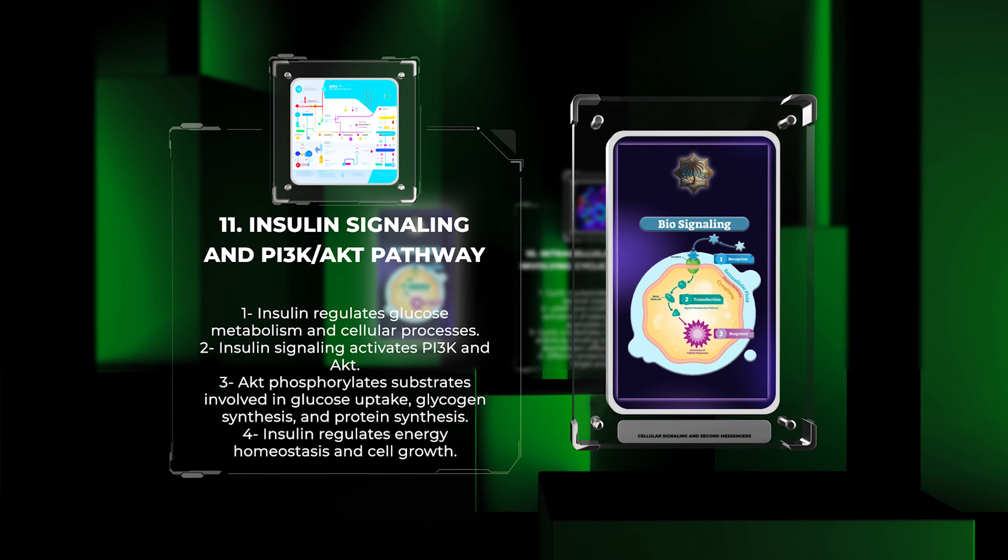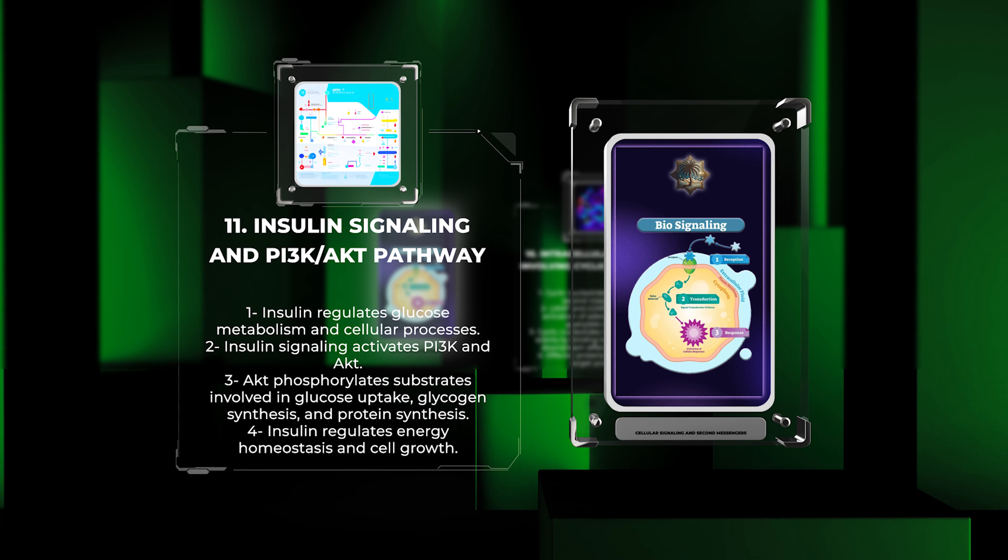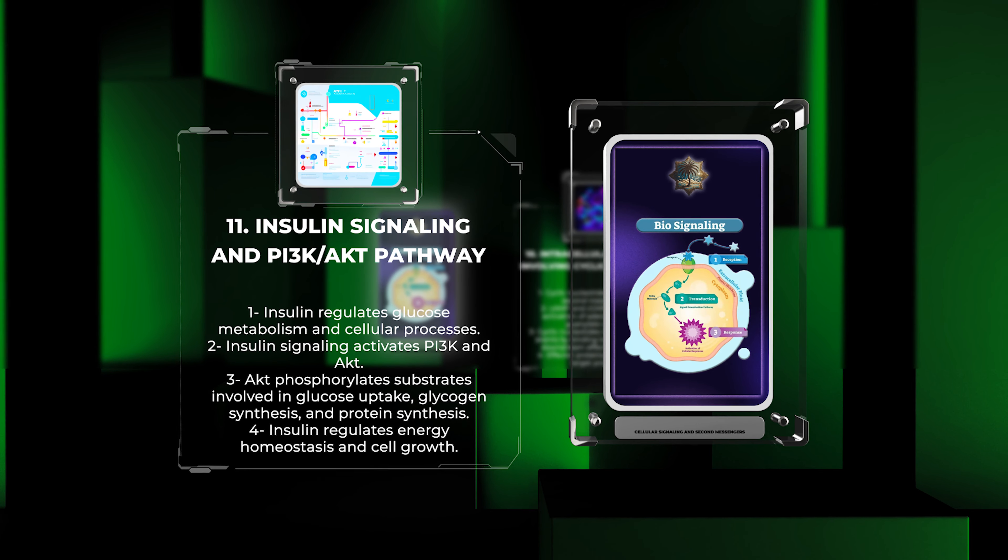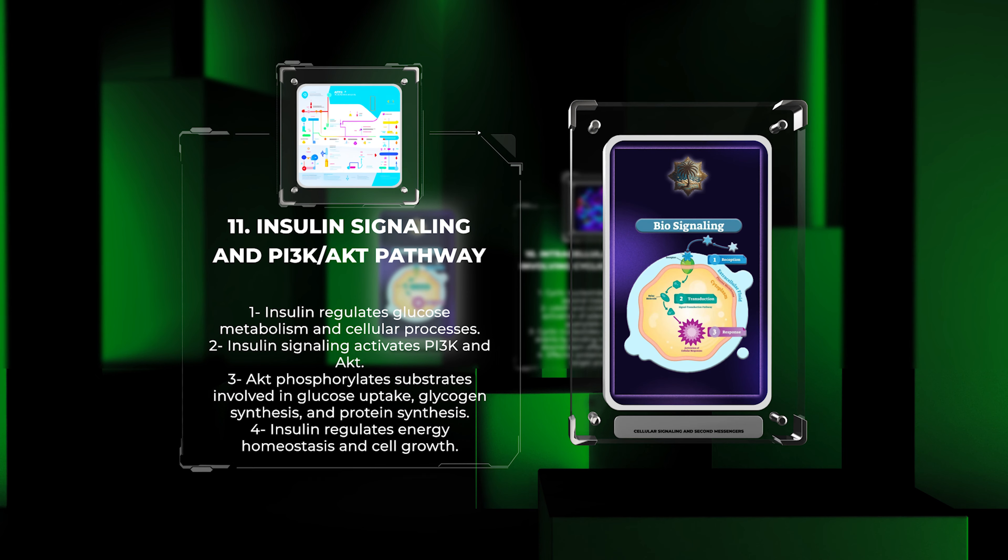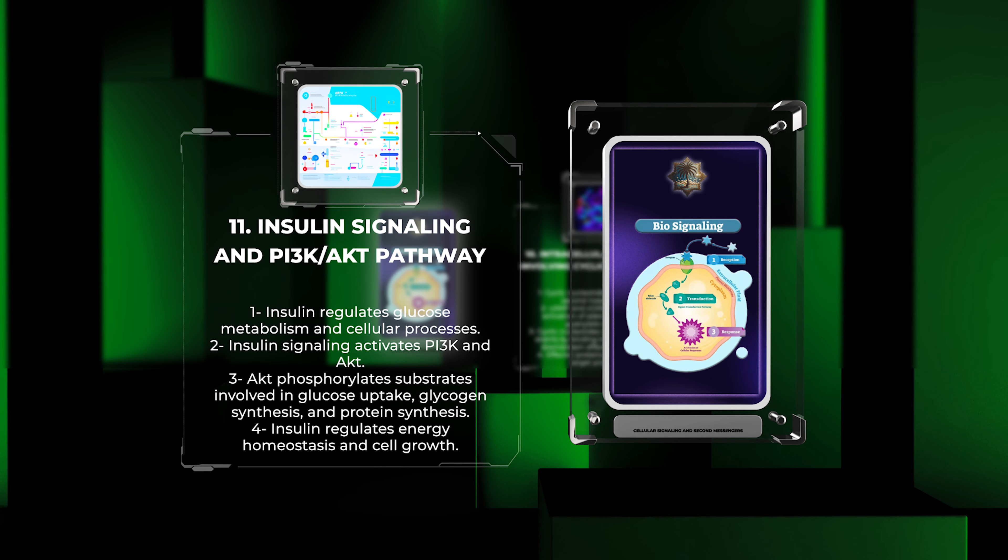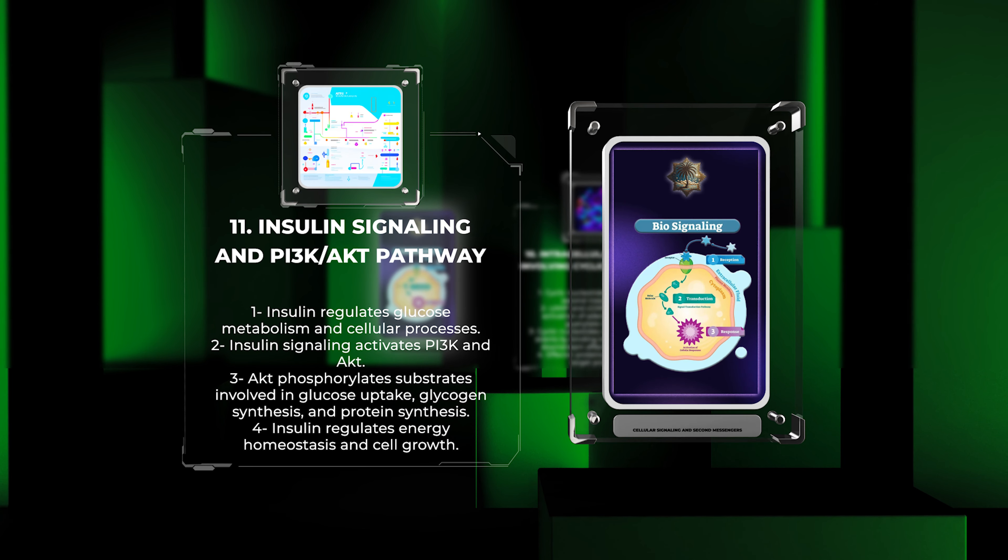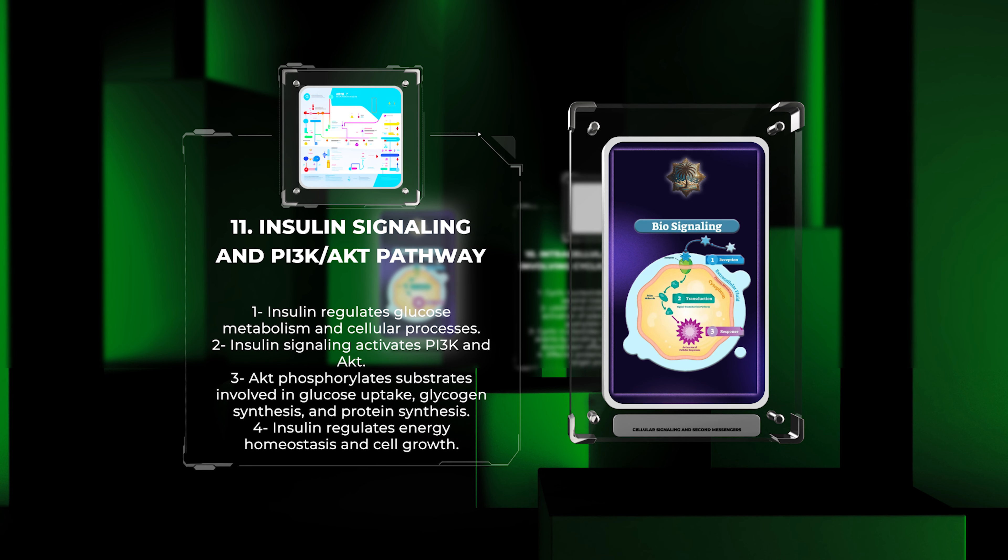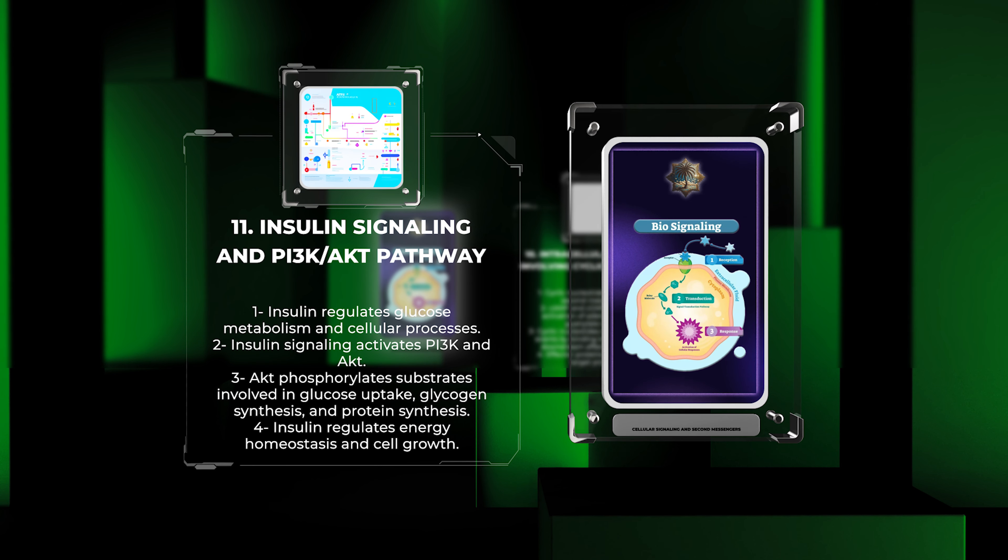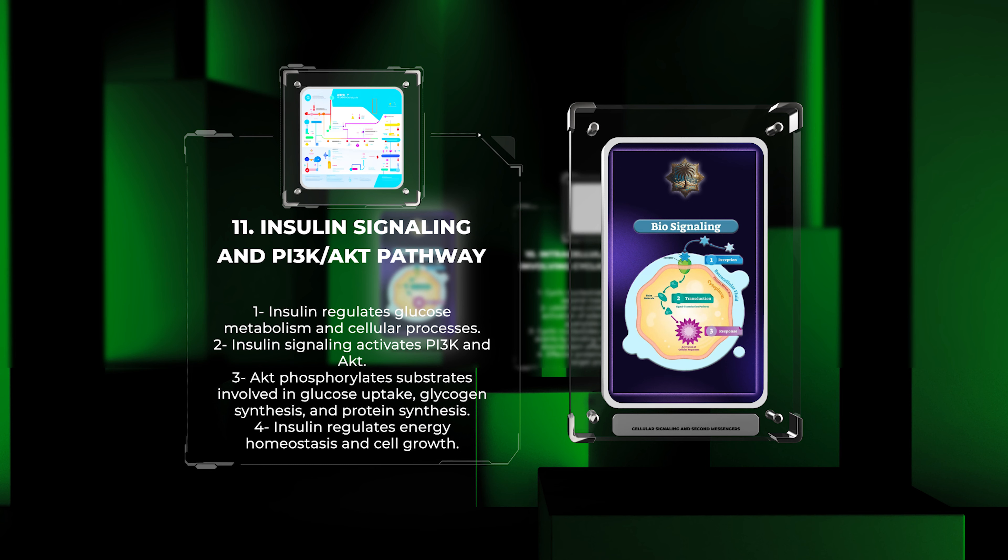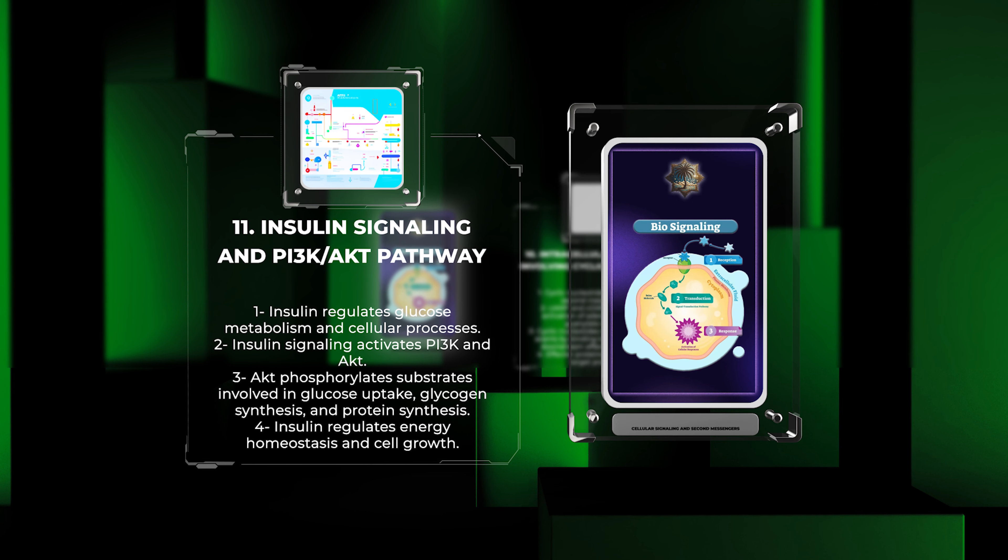Insulin is a hormone that plays a pivotal role in regulating glucose metabolism and other cellular processes. Insulin signaling activates phosphoinositide-3-kinase, PI3K, and subsequently protein kinase B, AKT. AKT phosphorylates a multitude of substrates involved in glucose uptake, glycogen synthesis, and protein synthesis, thereby regulating energy homeostasis and cell growth.